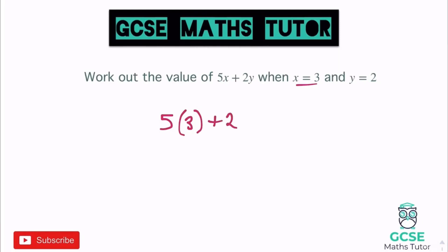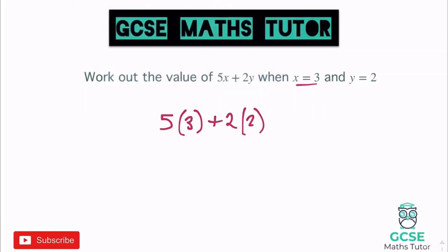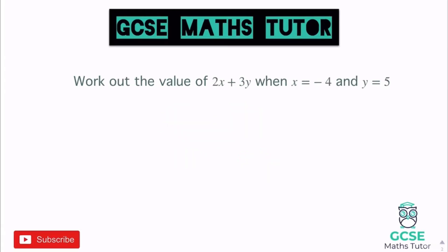So I write 5 lots of 3 in a bracket, since x is 3, added to 2 lots of 2. Then we multiply those out: 5 lots of 3 is 15, add 2 lots of 2 which is 4, and 15 plus 4 is 19. So 19 is the value of 5x + 2y with these values.